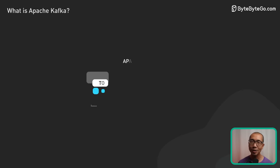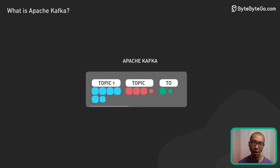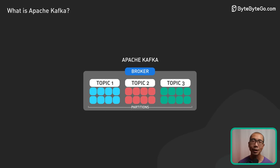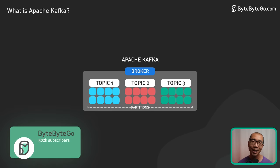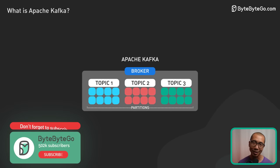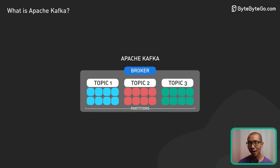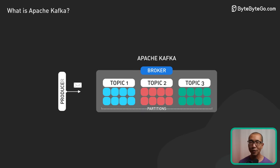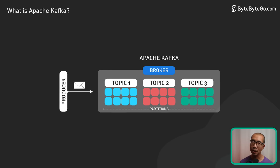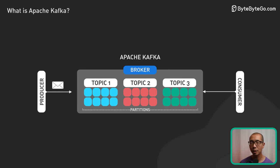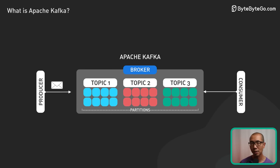Event streams are organized into topics that are distributed across multiple servers called brokers. This ensures data is easily accessible and resilient to system crashes. Applications that feed data into Kafka are called producers, while those that consume data are called consumers.